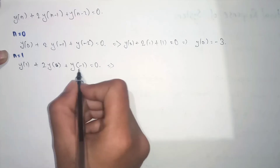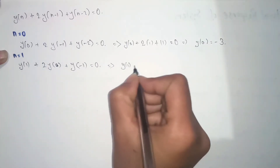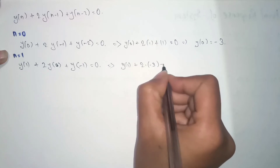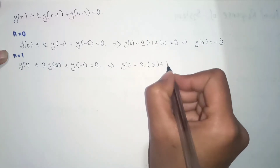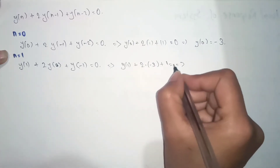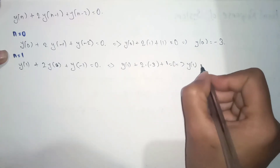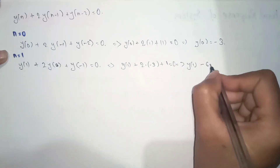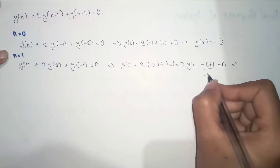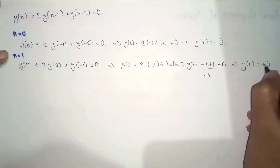We got y(0) = -3. Now substituting n = 1 into equation 2: y(1) + 2·y(0) + y(-1) = 0. Substituting y(0) = -3 and the initial condition value y(-1) = 1: y(1) - 6 + 1 = 0, so y(1) = 5.